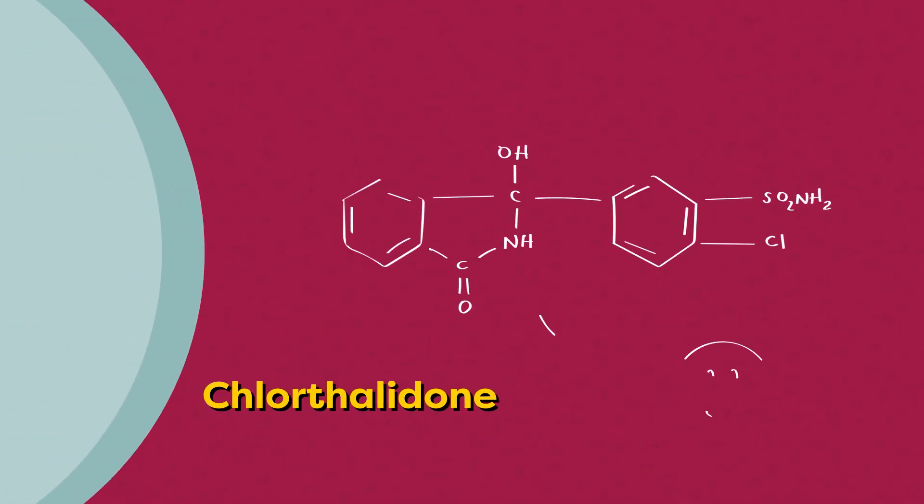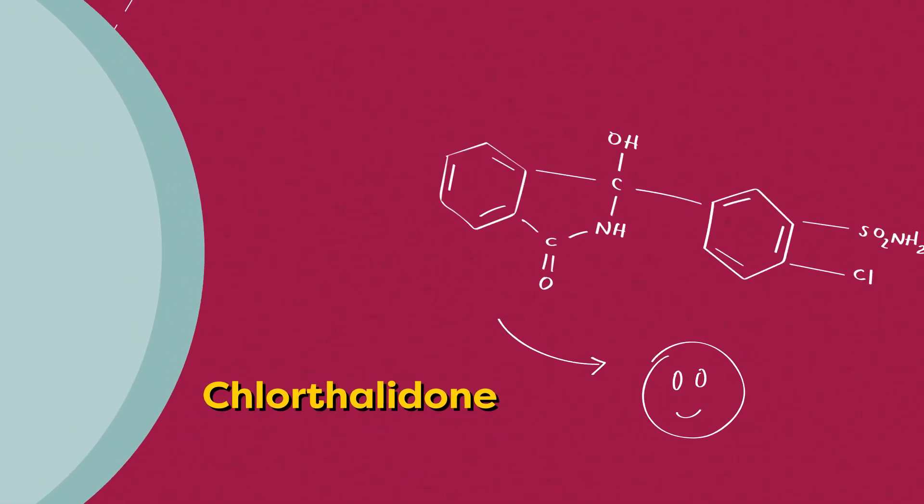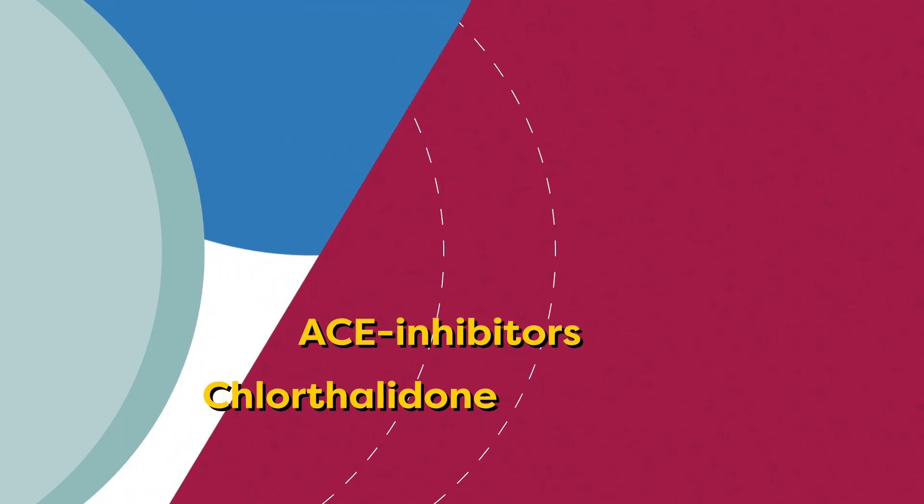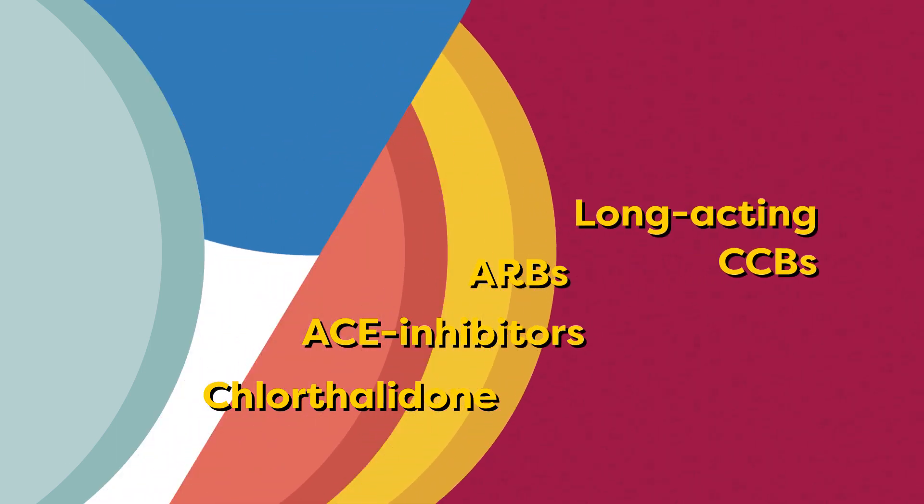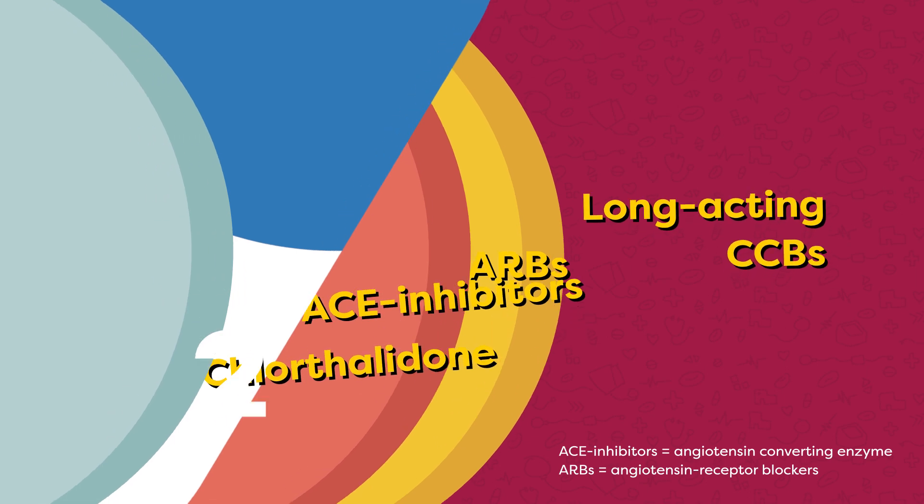Chlorthalidone is often used first because it leads to better outcomes. Other first-line drugs include ACE inhibitors, ARBs, and long-acting calcium channel blockers. Second,